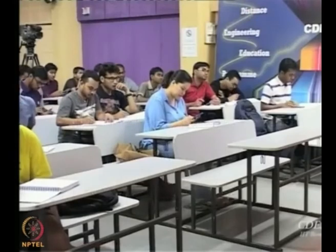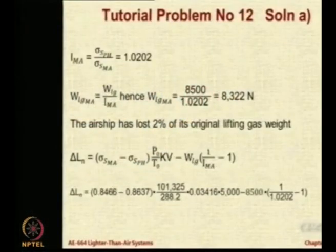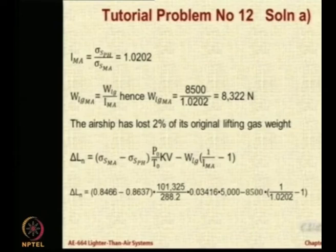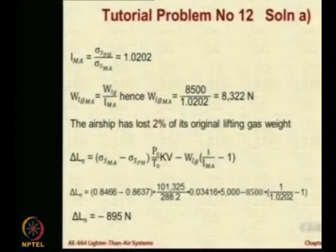168.3. Let us wait for somebody else to get the answer. Yes, exactly, 158.49. So, two people have got 158.49. So, the net static lift has been reduced because 8500 minus 8322 newtons of gas has been thrown away, that much of gas has been thrown away.